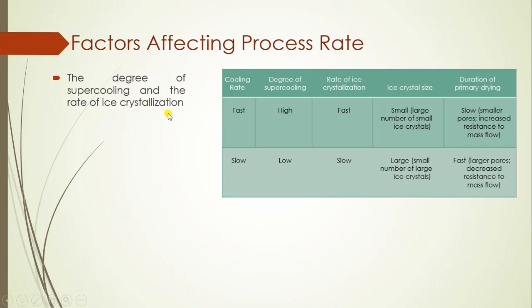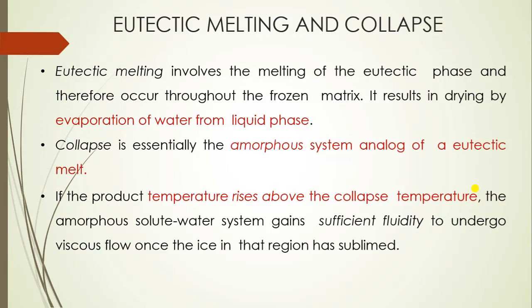Another factor is the degree of supercooling and ice crystallization. If the cooling rate is fast, the degree of supercooling will be high, the rate of crystallization will be fast, and it will produce small ice crystals. Primary drying will be slow because smaller pores provide more resistance for mass flow. When cooling rate is low, the degree of supercooling is low, providing slow rate of ice crystallization, producing large ice crystals and larger pores, decreasing resistance to mass flow. The key to successful drying is to remove water vapor from the frozen cake without allowing liquid water to form, and temperature must be below the eutectic temperature but high enough to provide sufficient sublimation rate.